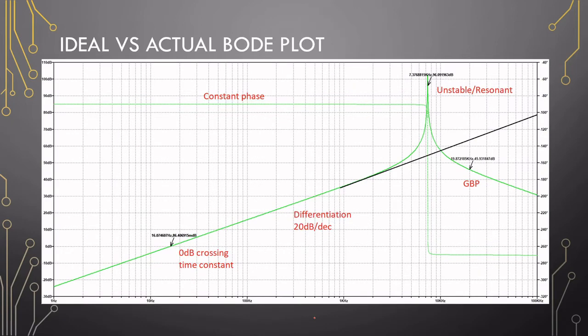Let's look at both plots of the ideal versus actual differentiator. On a Bode plot, a differentiator is a straight line with a plus 1 slope. This would continue up until infinity with a constant phase. Differentiation happens at 20 decibels per decade going up. But in practice, the gain bandwidth product of your op-amp and this line will intersect at some point and create this unstable or resonant frequency.